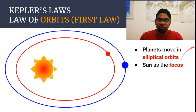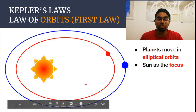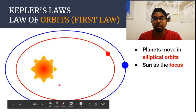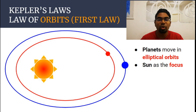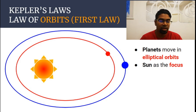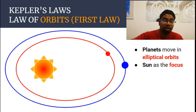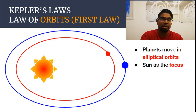Kepler was a German astronomer, and he worked based off the heliocentric model. The heliocentric model is the model where the sun is the center and the planets are orbiting the sun, as opposed to the geocentric model. The geocentric model was a model before the heliocentric model, where people believed that the Earth was the center of the solar system, and the sun and other planets and stars were circling around the Earth. So this is based off the heliocentric model.